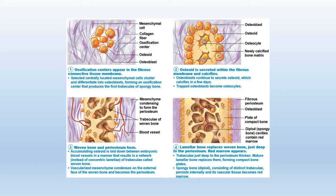Here are the four steps of intramembranous ossification in diagram form. First, an ossification center forms containing mesenchymal cells. Those mesenchymal cells differentiate into osteoblasts shown in orange. In step two, osteoblasts secrete osteoid, and as they become surrounded by osteoid, they become osteocytes or mature bone cells. Next, the woven bone is laid down around blood vessels, resulting in trabeculae. Lastly, lamellar or mature bone replaces that woven bone and red marrow appears.